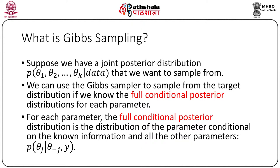Suppose we have a joint posterior distribution P of theta 1 up to theta K given the data that we want to sample from. We can use the Gibbs sampler to sample from the target distribution if we know the full conditional posterior distribution for each parameter. For each parameter, the full conditional posterior distribution is the distribution of the parameter conditional on the known information and all the other parameters.